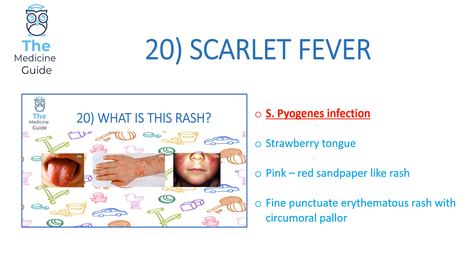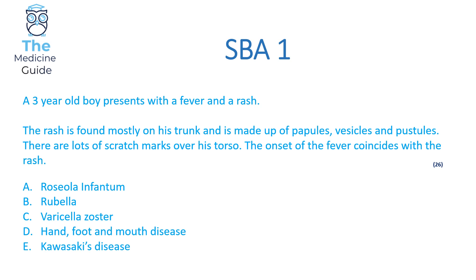We've now gone through the top 20 high yield paediatric rashes that crop up in finals. We now move on to five practice SBAs. You can pause the video for a short break or continue straight on.